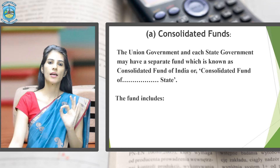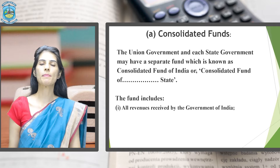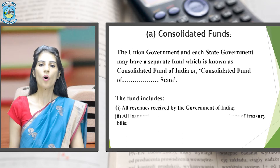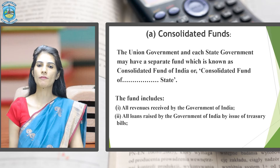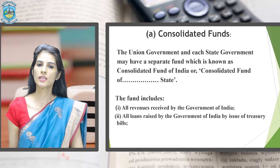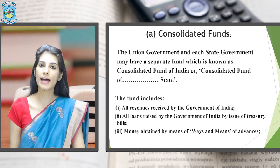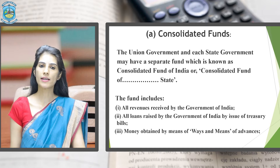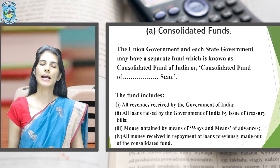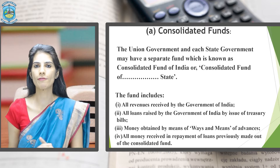Now, what does the Consolidated Fund include? First, it includes all revenues received by the Government of India. Second, all loans raised by the Government of India by issue of Treasury bills. Third, money obtained by means of ways and means of advances. And the fourth one is all money received in the repayment of loans that were previously made out from the Consolidated Funds of India.